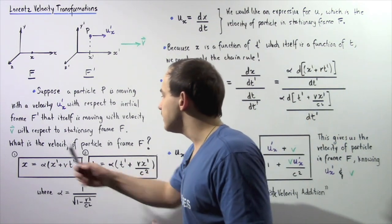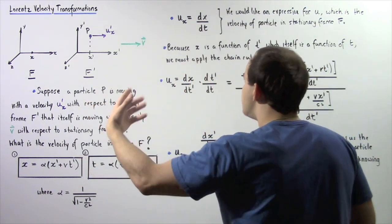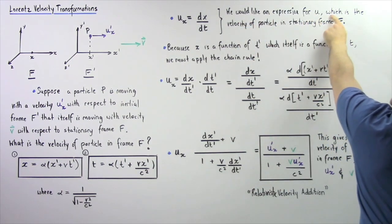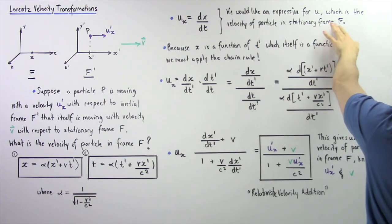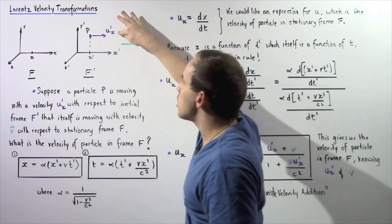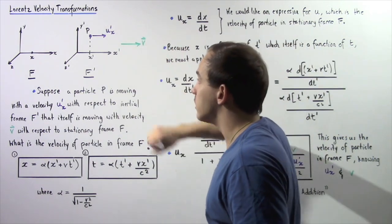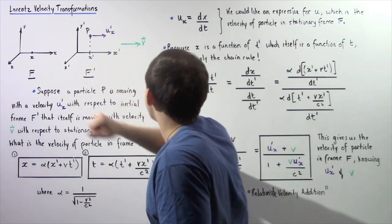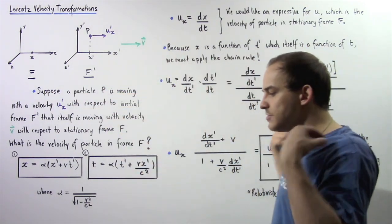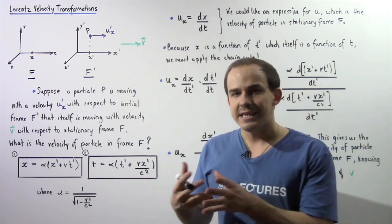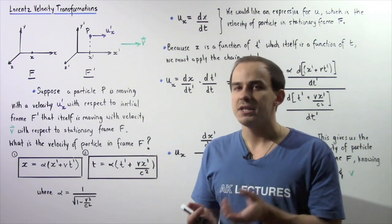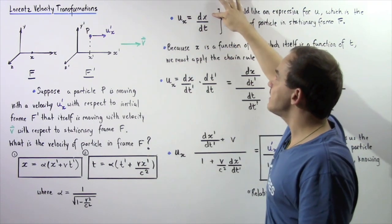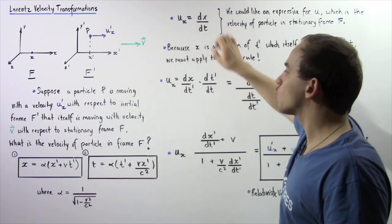Our goal is to find the velocity of the particle in reference frame F, the stationary frame. We want an expression for ux, the velocity of the particle in stationary frame F. The instantaneous velocity is equal to the derivative of displacement with respect to time, so ux equals dx divided by dt.